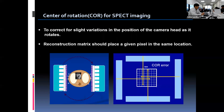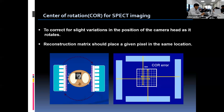Now we are going to look at the COR test and tomographic phantom study, which are the tests to monitor the SPECT system. When you perform SPECT imaging, the camera has to rotate for three-dimensional acquisition. If the rotation is perfect, the reconstruction matrix will always place a given pixel in the same location. To check and correct for slight variation in the position of the camera head when it rotates, COR evaluation needs to be performed.